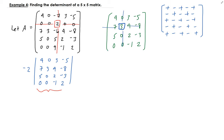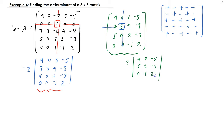Using the sign convention for the four by four — plus, minus, plus — this is going to be plus three, times the determinant of the sub-matrix: four, three, negative five, five, two, minus three, zero, negative one, two.